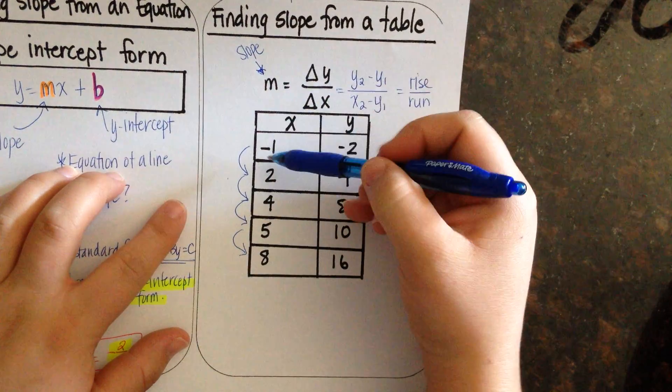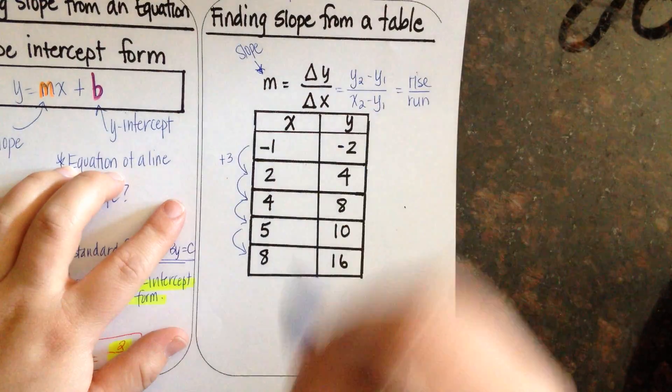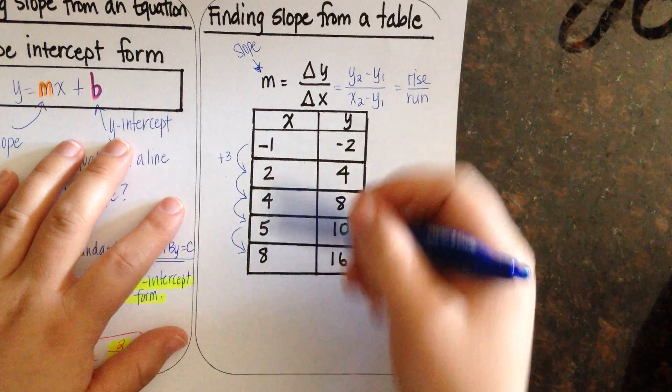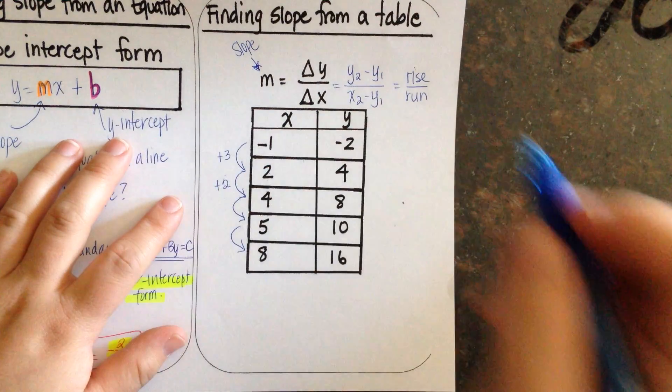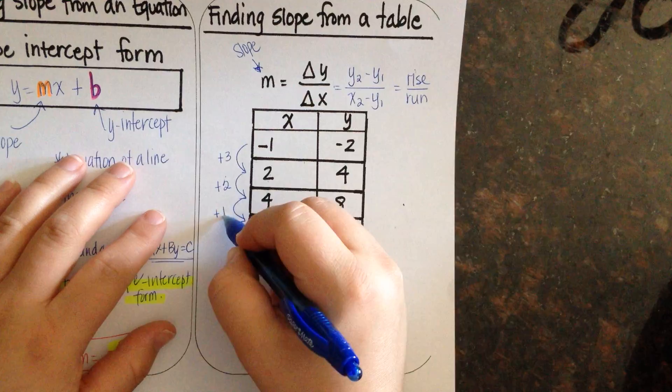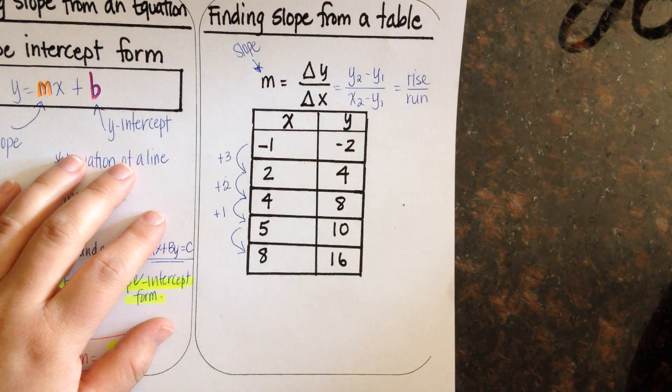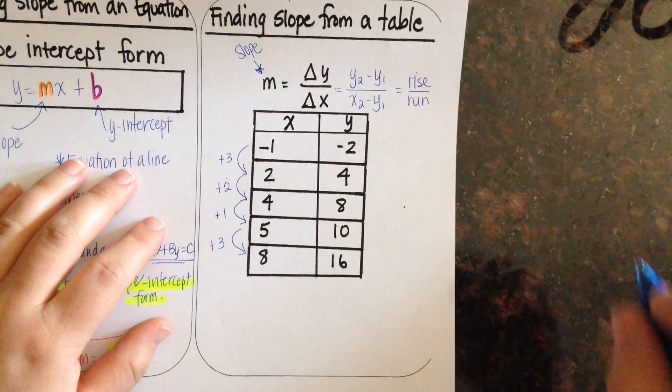So when I go from negative 1 to 2, that increases by a value of 3. 2 to 4, it increases by a value of 2. 4 to 5, it increases by a value of 1. 5 to 8, it increases by a value of 3.